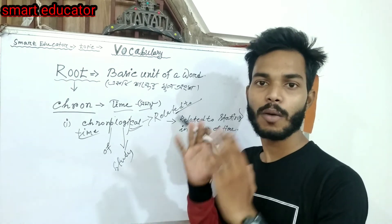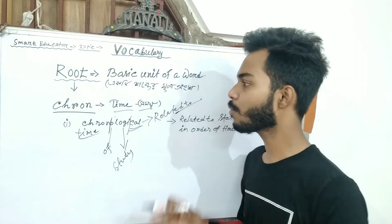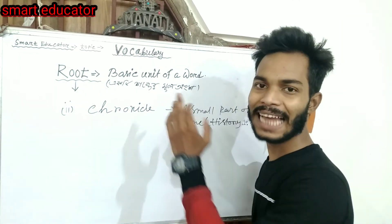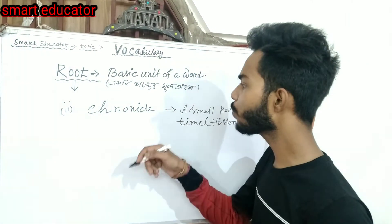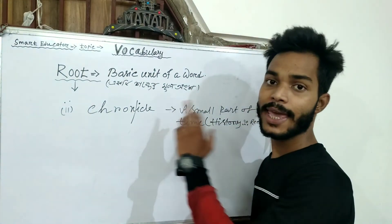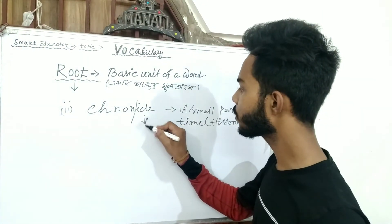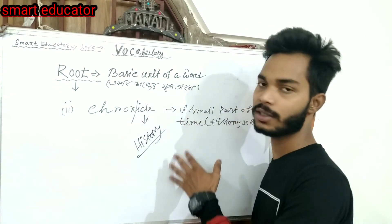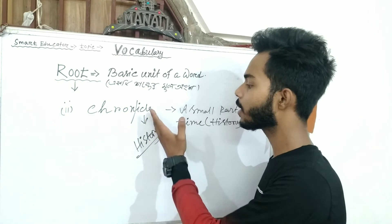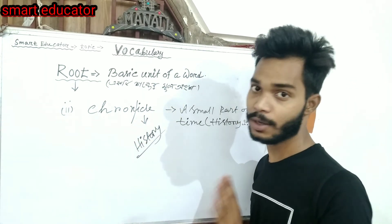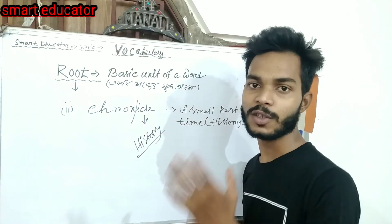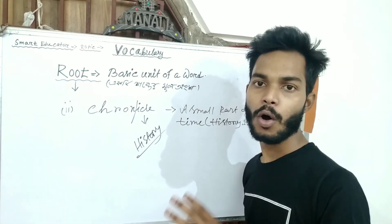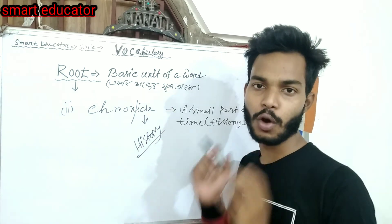Let us know in the comments who is the next word. 'Chronicle' — which also comes from chron, meaning time. Chronicle means a record of historical events or a small part of historical time.